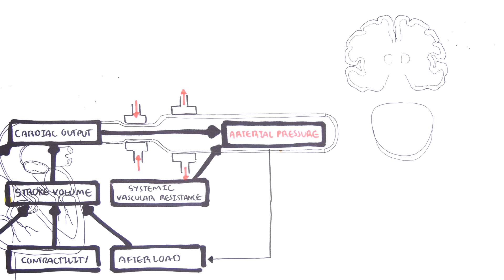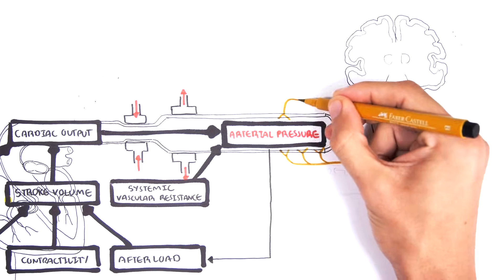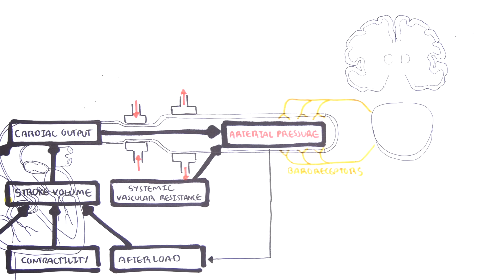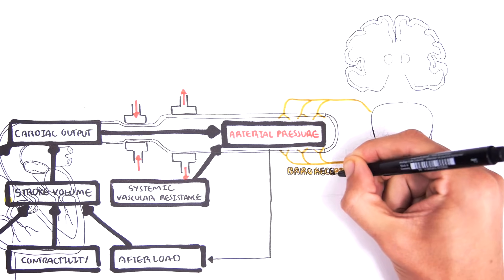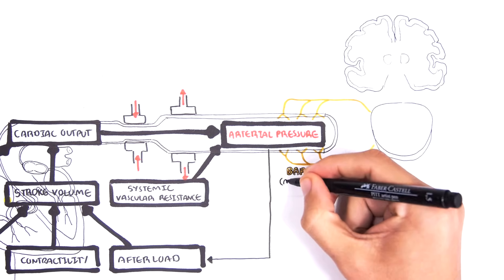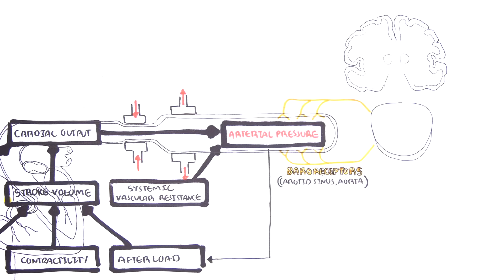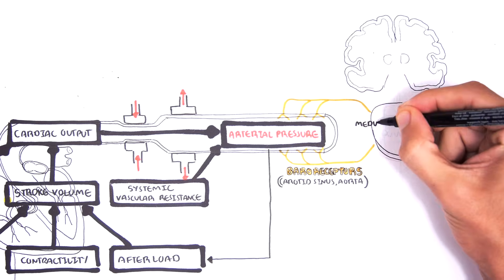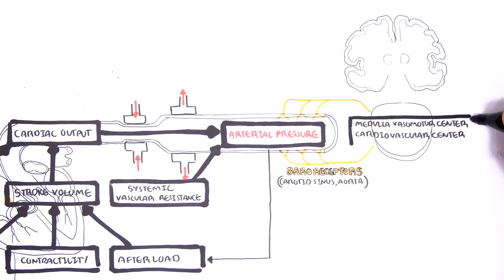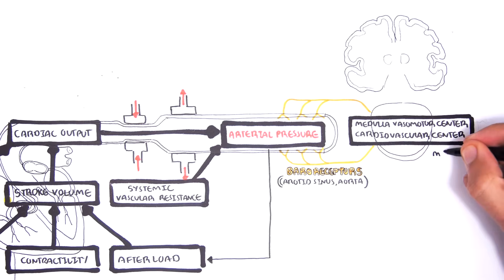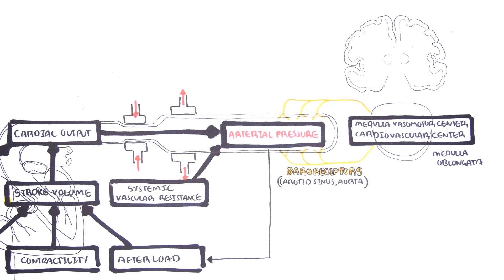In your big arteries in the body there are special pressure receptors called baroreceptors. These are specifically found in your carotid sinus and your aortic arch. These baroreceptors detect an increase or decrease in pressure in the arteries and relay this information to the brain stem — to the medulla oblongata — to areas called the medulla vasomotor center and the cardiovascular center.